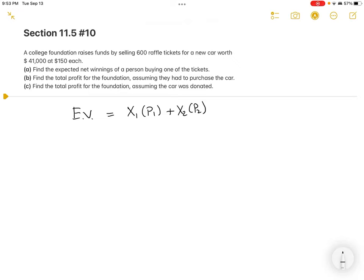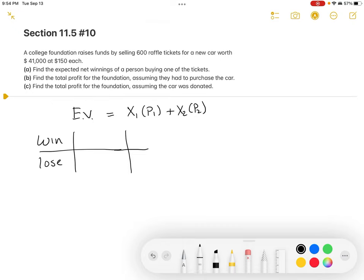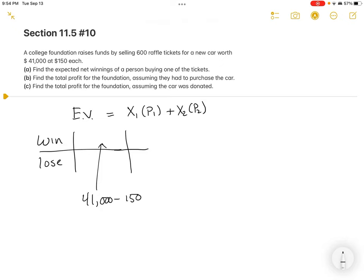Let's talk about what can happen when that person buys a ticket. They can either win or lose. If they win, they get a car worth $41,000. But what needs to be here is profit. This person made an initial investment - they spent $150. So what should be here is not $41,000, but $41,000 minus the $150 they paid for the ticket, which equals $40,850. That would be their net profit.